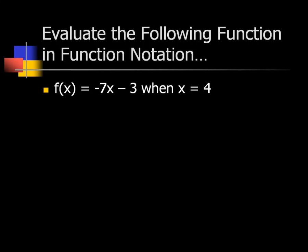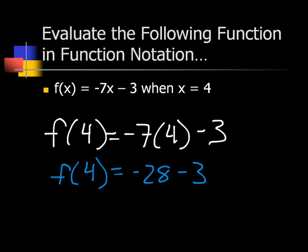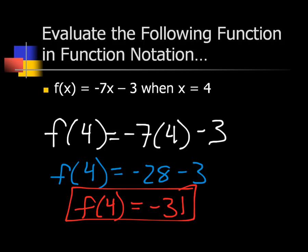One more: evaluate f(x) = −7x − 3 when x is 4. The function at 4 equals negative 7 times 4 minus 3. I just simplify the right side — multiplication before subtraction. Negative 7 times 4 is negative 28, and negative 28 minus 3 is negative 31. So f(4) = negative 31. The input is 4 and the output is negative 31.